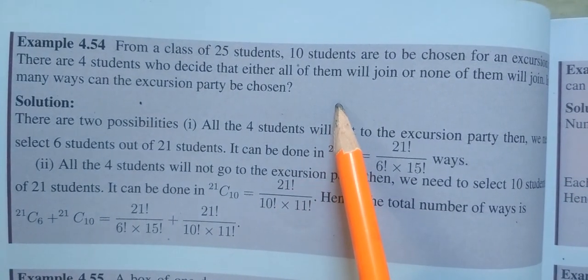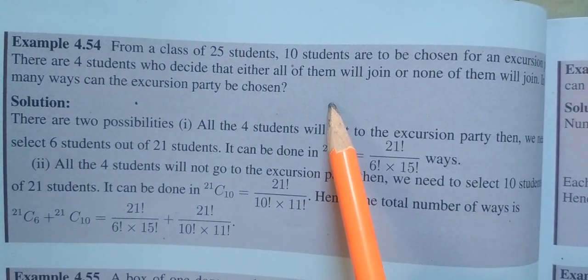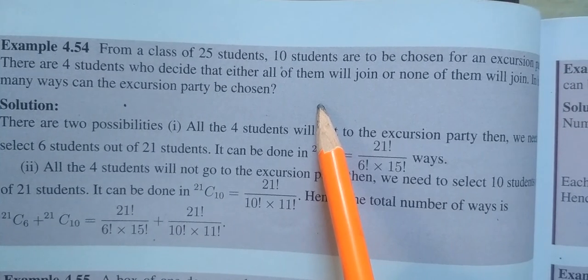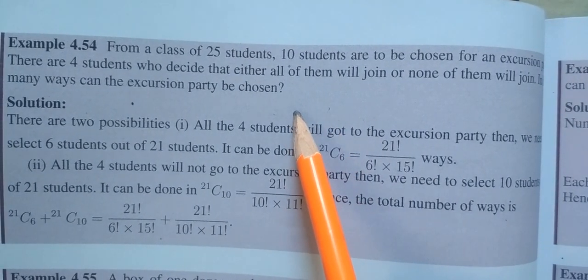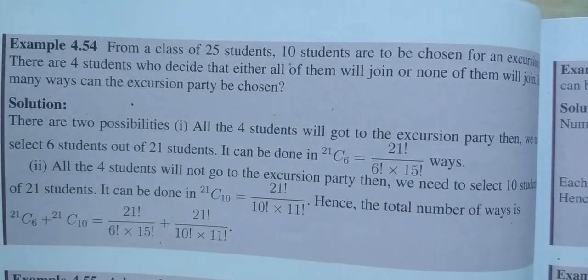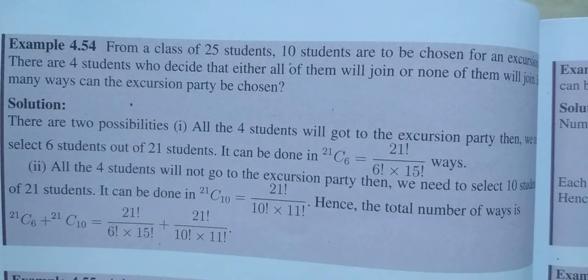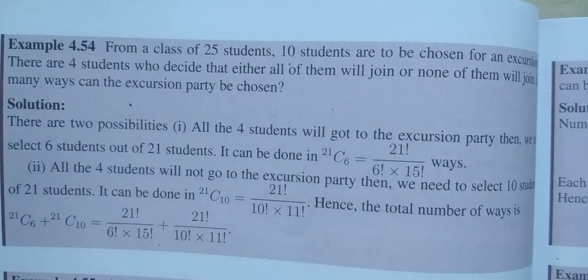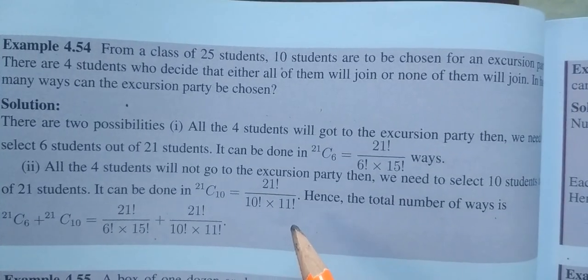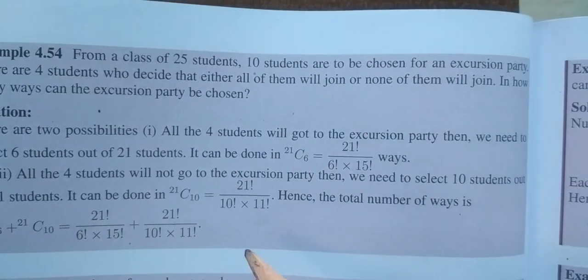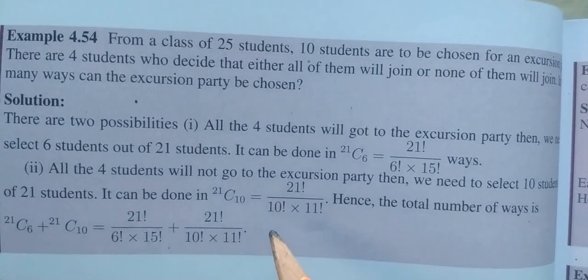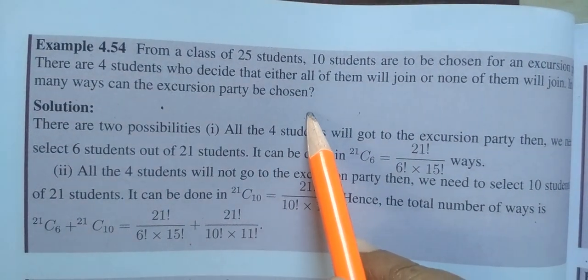From a class of 25 students, 10 students are to be chosen for an excursion. There are 4 students who decide that either all of them will join or none of them will join. So, in how many ways can the excursion party be chosen?